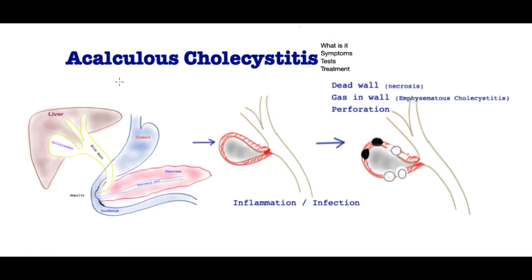In this video we will explore acalculous cholecystitis. The clue is in the name: acalculous means cholecystitis — inflammation of the gallbladder — but without a stone. We will explore what it is, symptoms, tests to diagnose it, and its treatment.